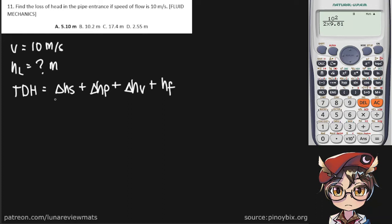So there weren't any elevation changes mentioned so the static head would just be zero. There is no mention of any pressure change either, so that is also zero. However, when it comes to the velocity head, we actually have a given of 10 meters per second so we do have a value for the velocity head. And finally the friction head, there is no mention of any Darcy friction factor so that is also zero.